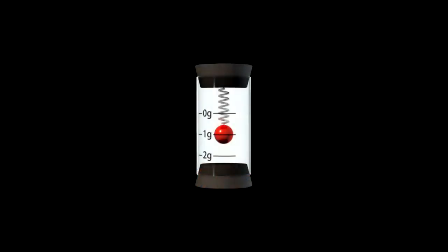They have two fundamental parts. A housing attached to the object whose acceleration we want to measure, and a mass that can tether to the housing but still move. Here it's a spring with a heavy metal ball.